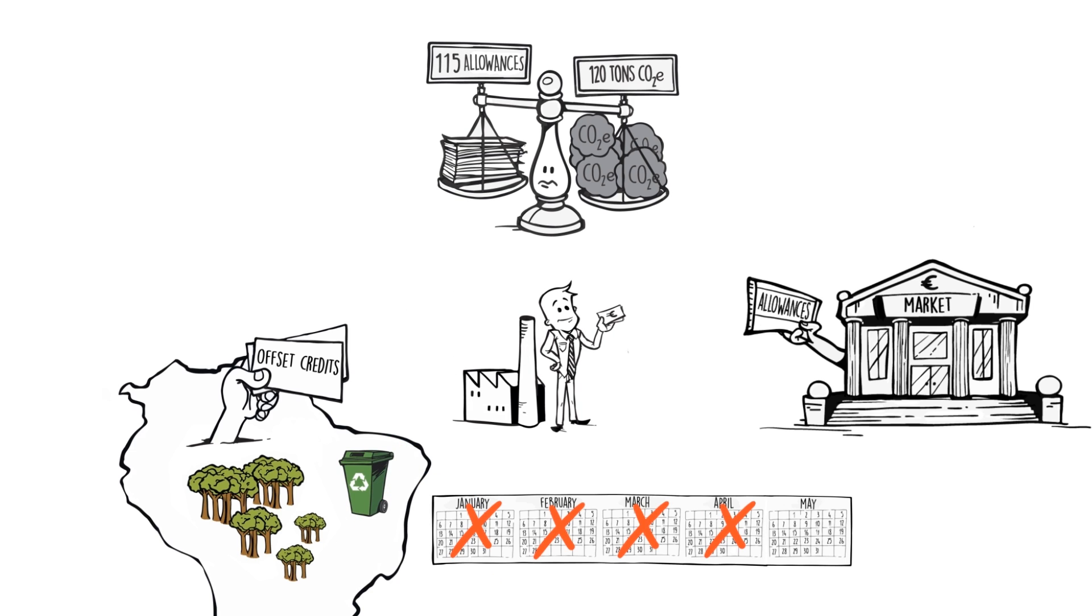Beyond the four-month period, if the company is not in compliance, it will have to pay a fine and provide the missing allowances.